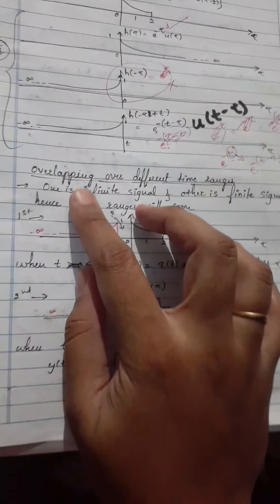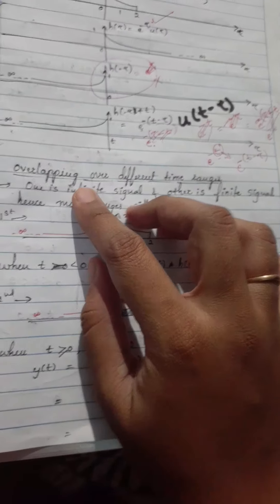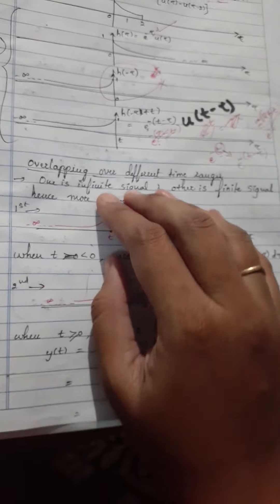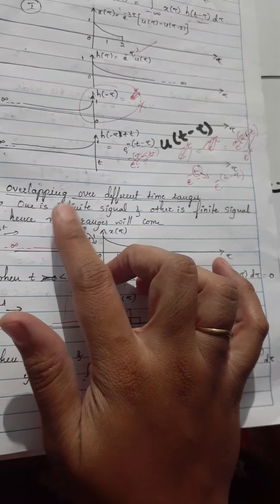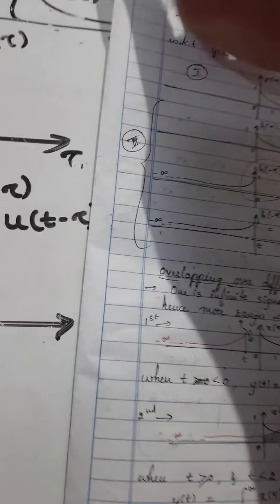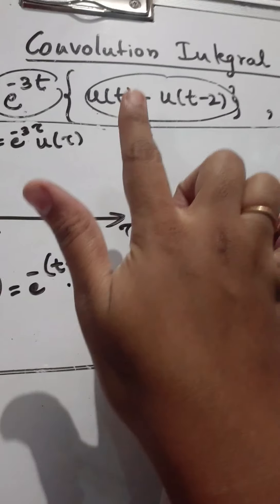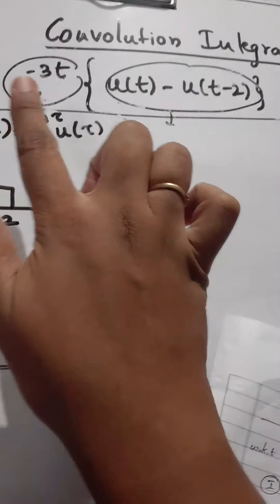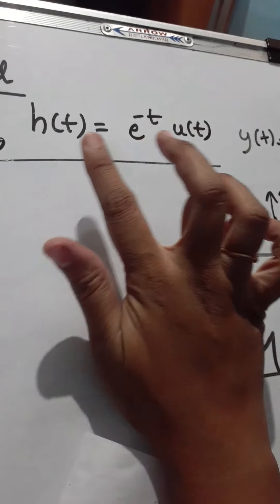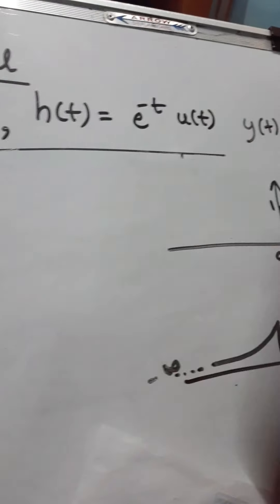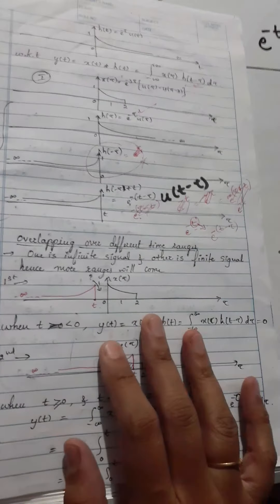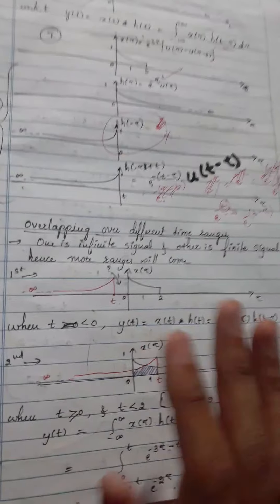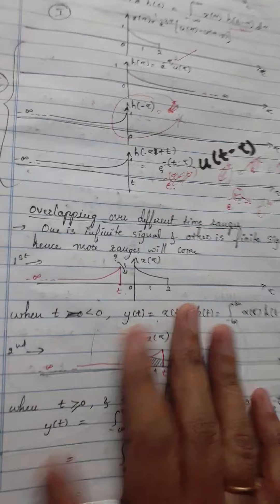Let us continue solving the previous problem. Now we need to go for different overlappings. One observation we can make is that out of the given two signals, x of t signal or x of tau signal is a finite signal and h signal is infinite. So as one is finite and one is infinite, more possibilities will come for overlapping.